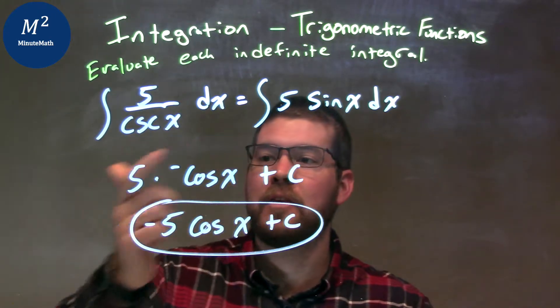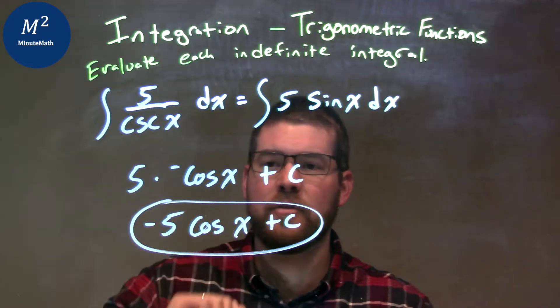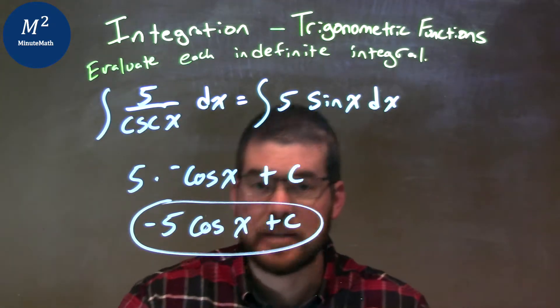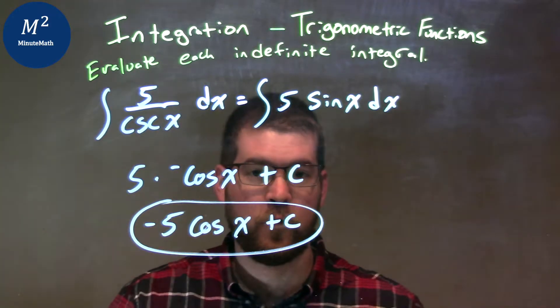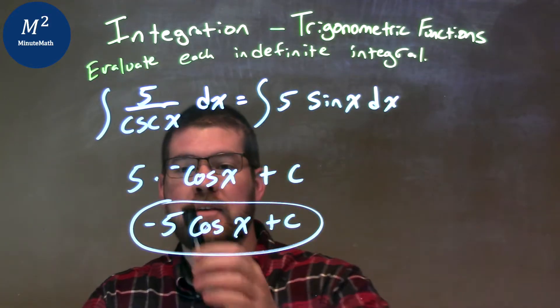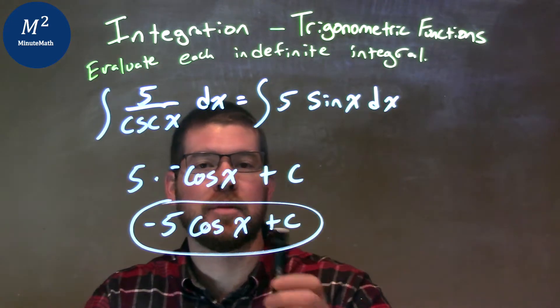The constant of 5 comes out front. The integral of sine of x is negative cosine of x, and don't forget the plus c, that constant right there. Simplify it. Negative comes out in front of the 5, and so our final answer here is negative 5 cosine of x plus c. Thank you.